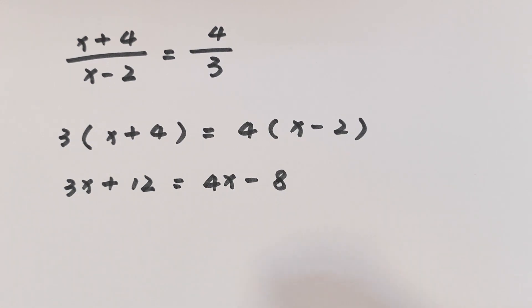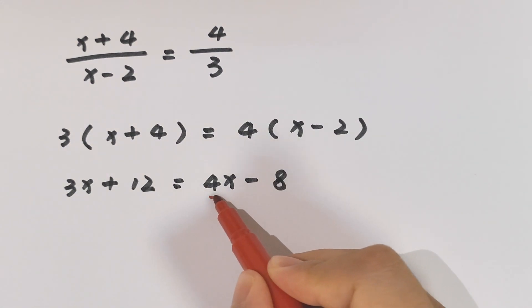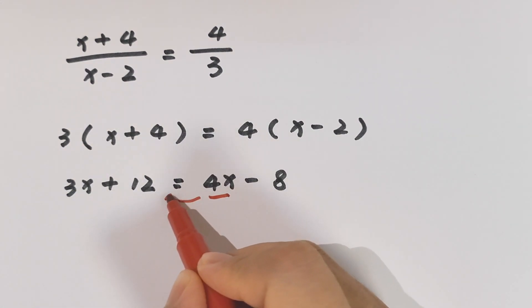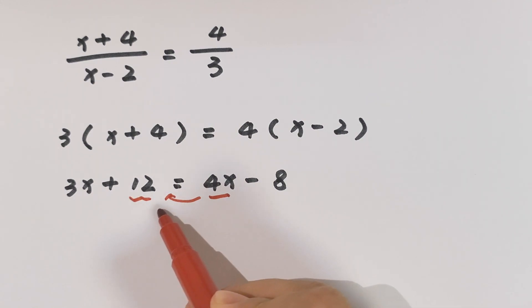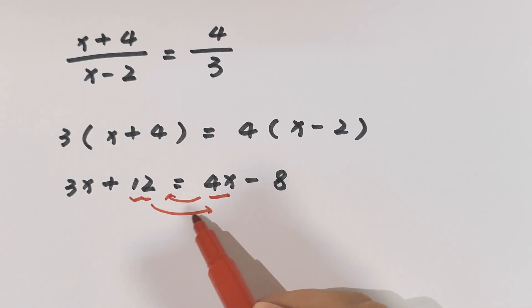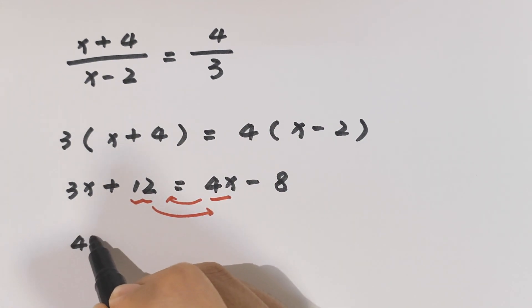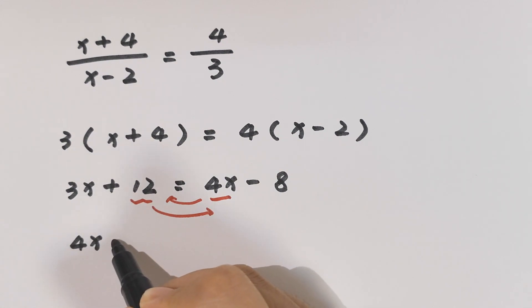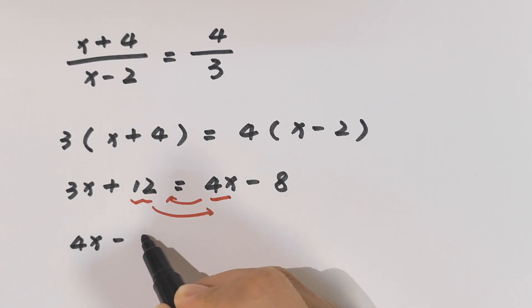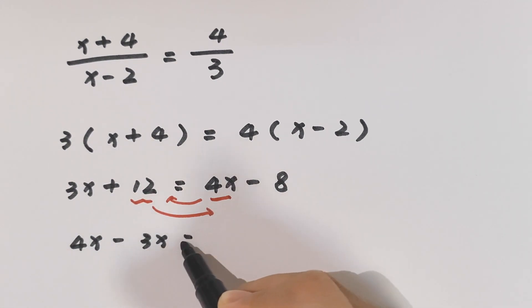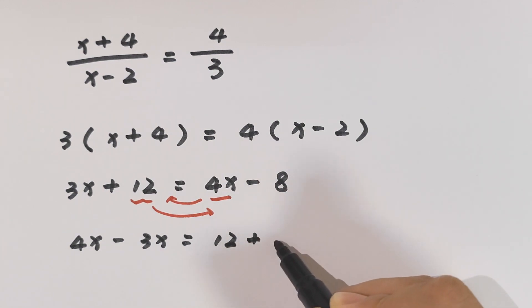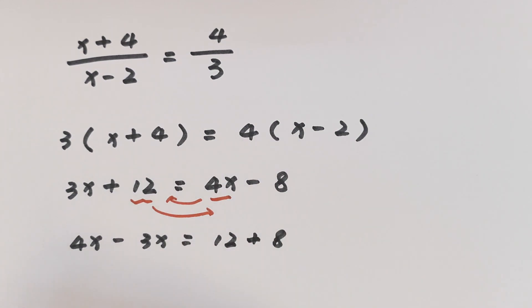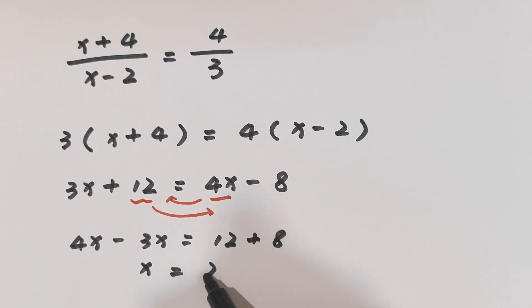Now we take x terms to the left side and constants to the right side: 4x minus 3x equals 12 plus 8, so x equals 20.